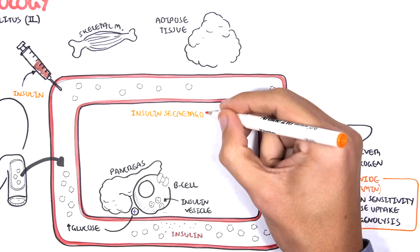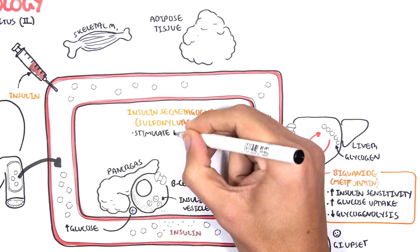The next pharmacological medications are insulin secretagogues such as sulfonylurea. Now these guys stimulate essentially B cells in the pancreas to release insulin. So insulin secretagogues such as sulfonylurea, these guys basically force the B cells to pump out insulin.